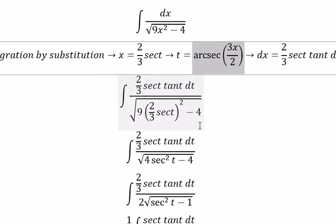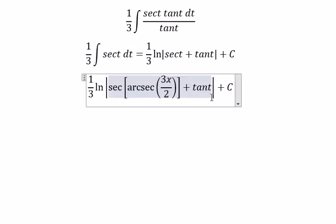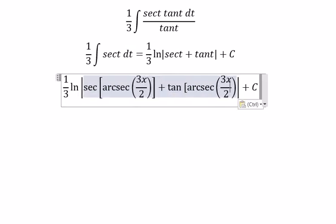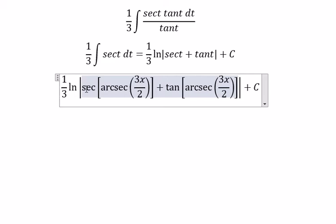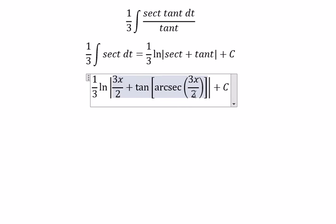So we put this one back in here. We have 1 over 3 ln of the absolute value of 3x over 2 plus tan of arcsec of 3x over 2, and that is the final answer.